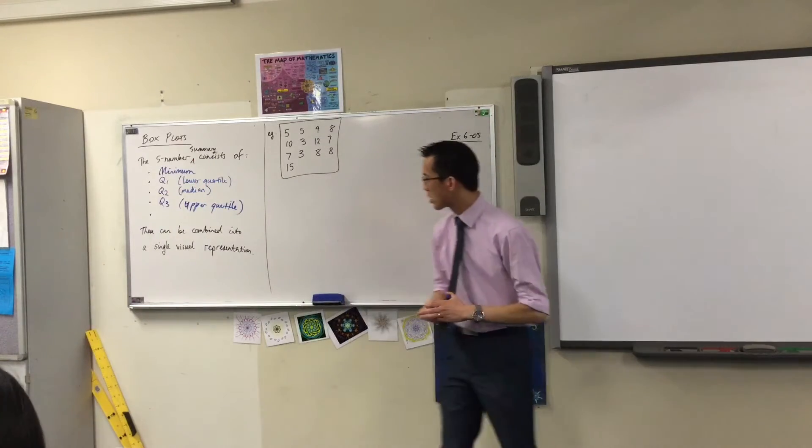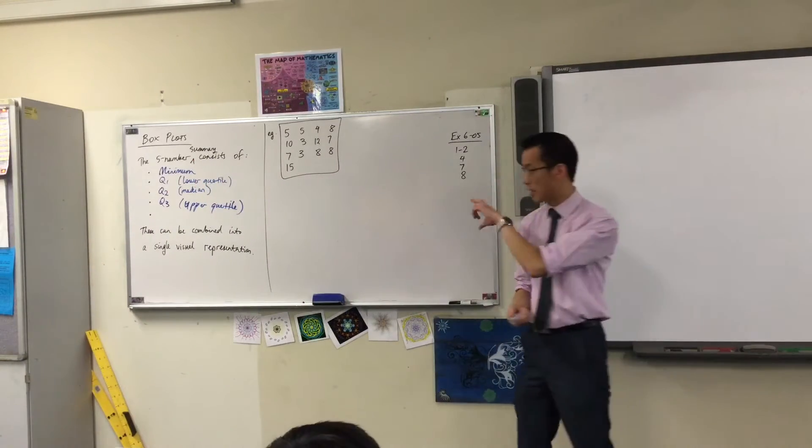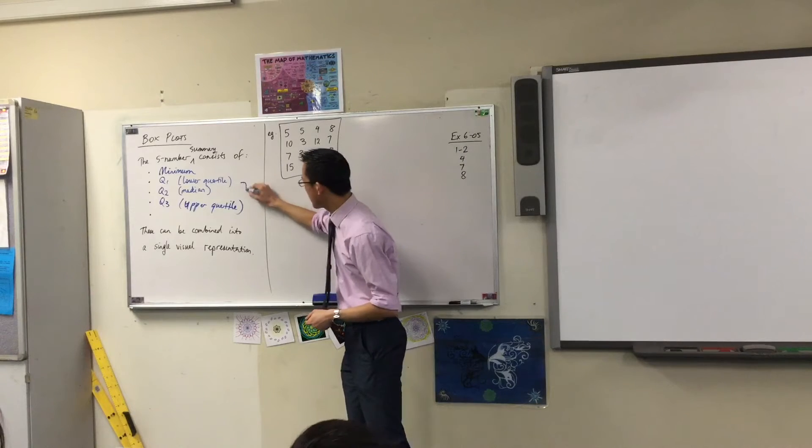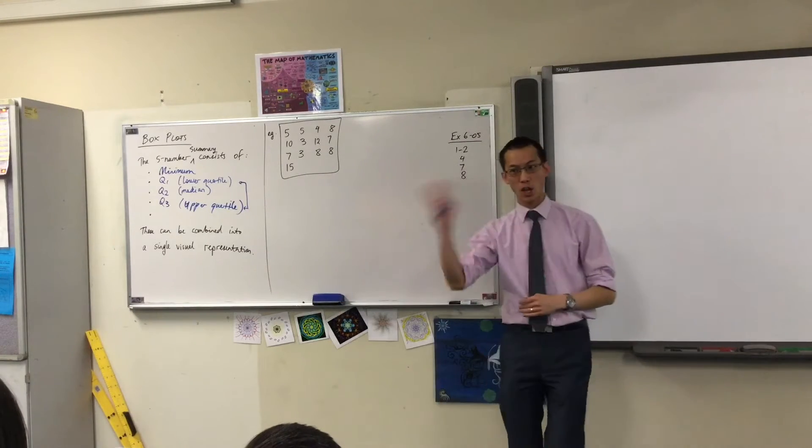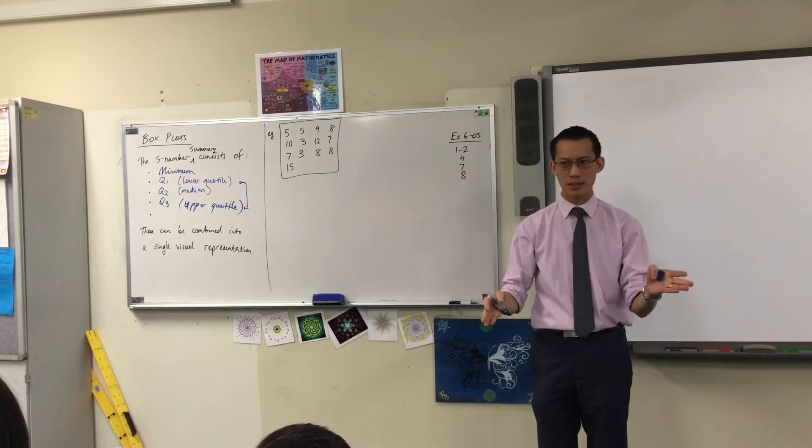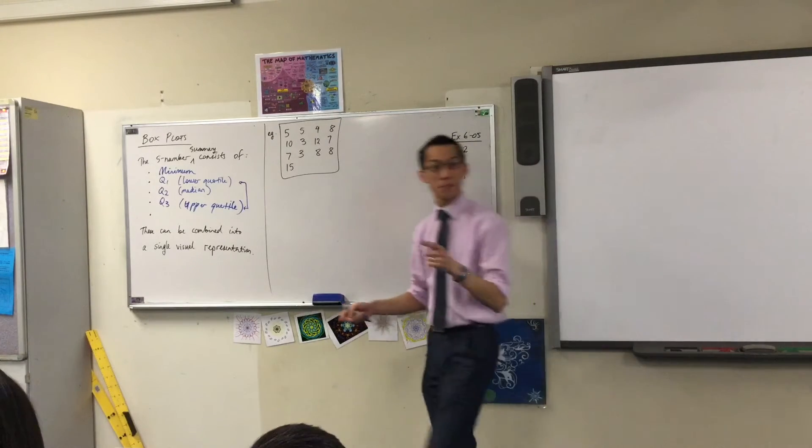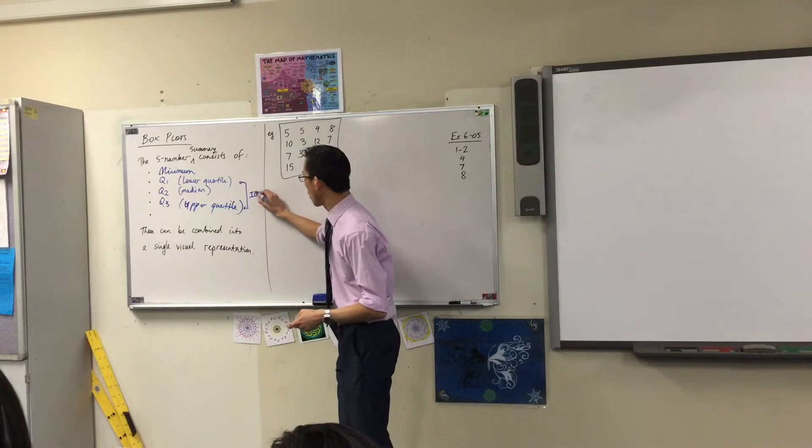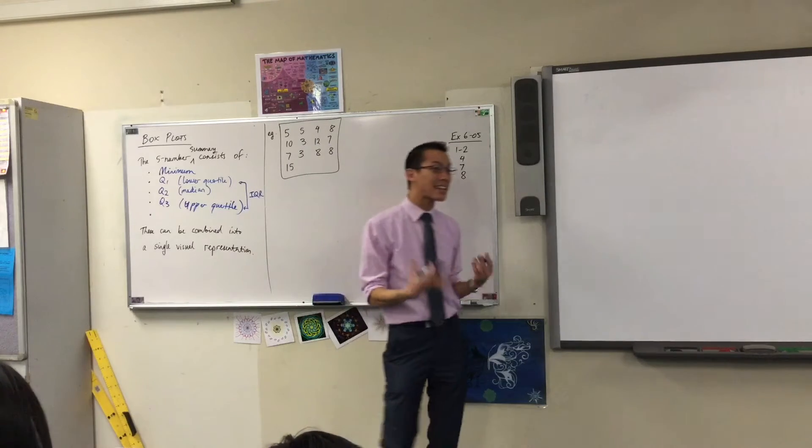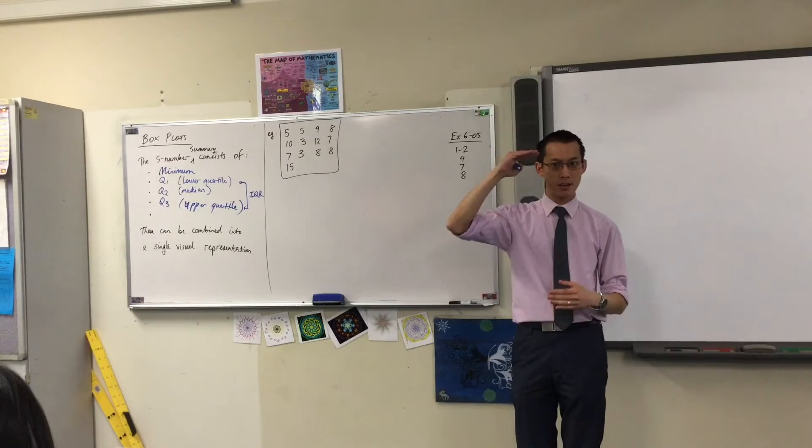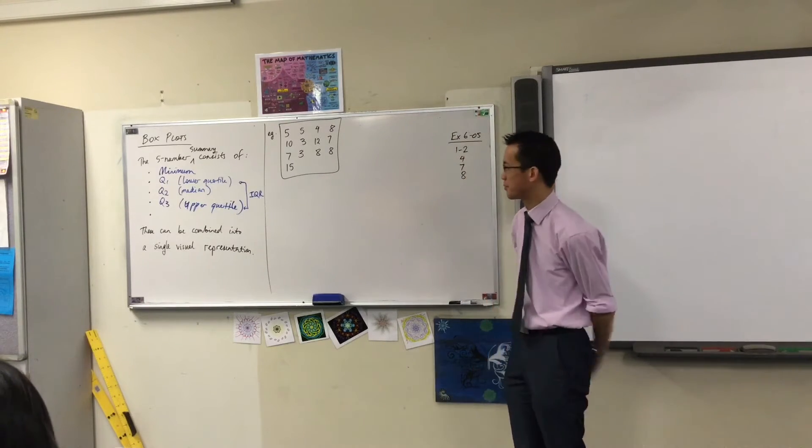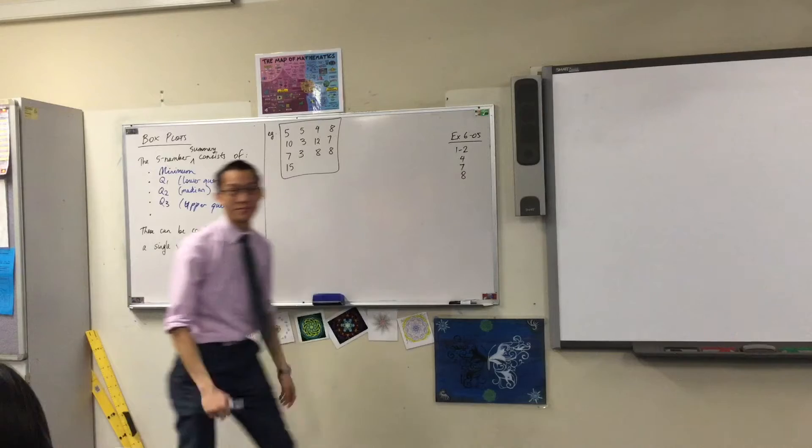Now, you've got your quartiles there. Before we get to that last number, there's a particular name to the distance or the gap between the lower quartile and the upper quartile. Does anyone remember what that name is called? Interquartile range. Very good. The interquartile range is exactly what it sounds like. It's the range, the difference between the quartiles, hence interquartile. Last piece of information. Maximum. Fantastic.